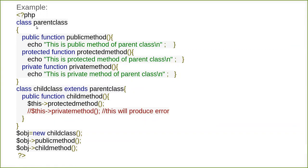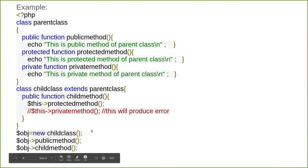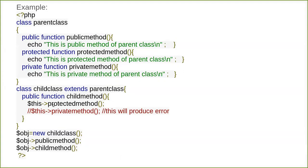Other than inheriting from the parent class, the child can have its own public, private, and protected methods. Here we have defined a public function called child method. Inside that we try to call the protected method - there will be no problem, it gets executed. But when you try to call the private method, it will show you an error, because only public and protected methods can be accessed by the child.